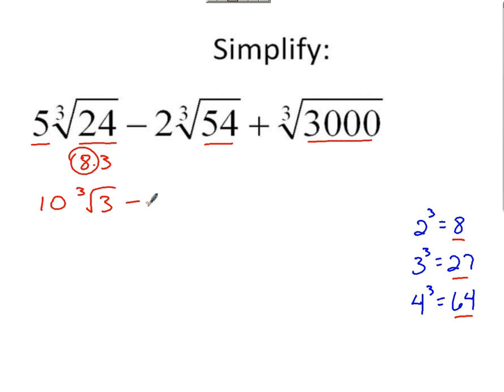Minus cube root of 54. Perfect cube that goes into 54, what is it? 27. So you've got 27 times 2. You take the cube root of 27, which is 3. 3 gets multiplied to 2 in front. Got 6. Got 2 left over, so it's cube root of 2.